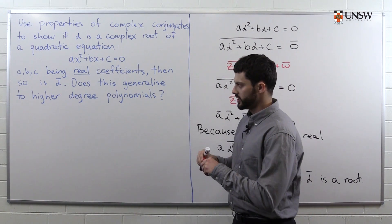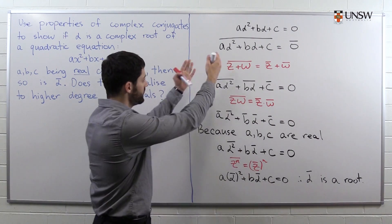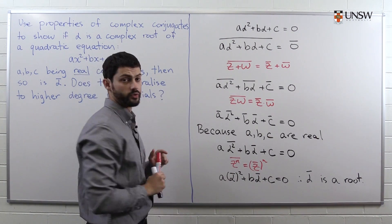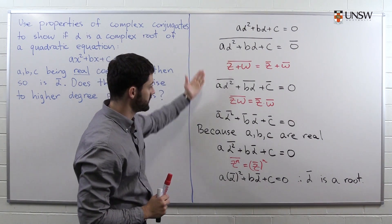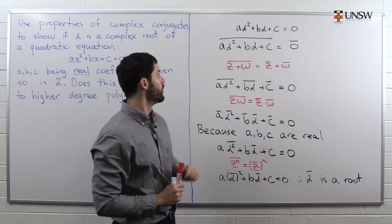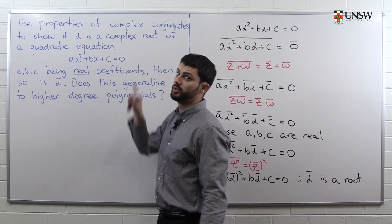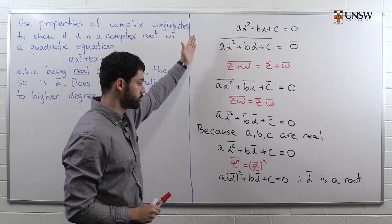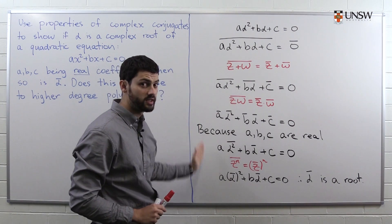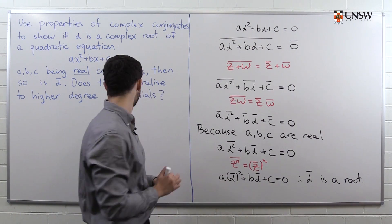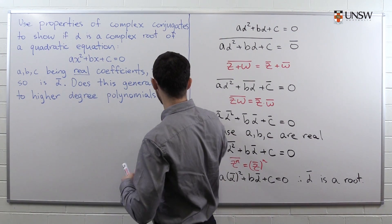The next part of the question asks: does this generalize to higher degree polynomials? Was there anything special here that only worked because the exponent was two? The answer is no — none of the rules relied on the fact that this is a two. We could have easily had a·x cubed plus b·x squared plus c·x plus d equals zero, and this proof would have worked exactly the same. We would have used exactly the same rules in exactly the same order and come to exactly the same conclusion. So the answer is: yes, this does generalize.